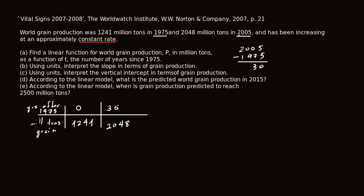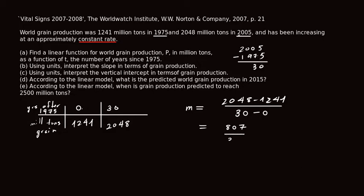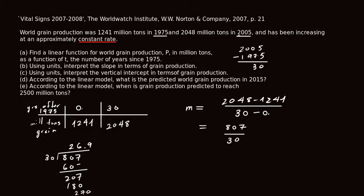This table gives us values to compute the slope. The slope is the difference in y-values over the difference in x-values: (2048 minus 1241) divided by (30 minus 0), which is 807 divided by 30. Doing the division: 30 goes into 807 — 2 times giving 60, remainder 207; 207 divided by 30 goes 6 times giving 180, remainder 27; then 9 times.